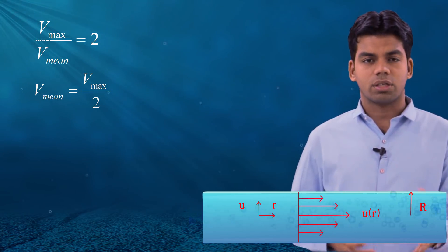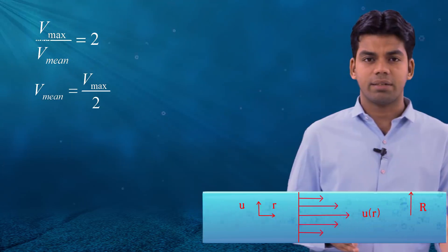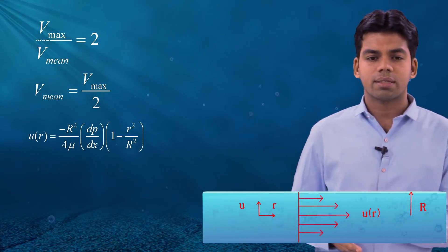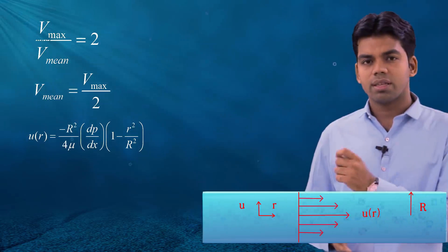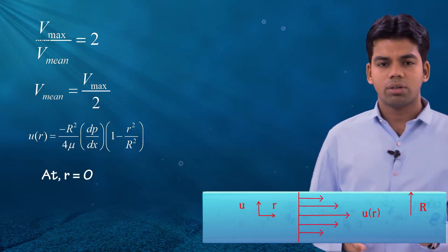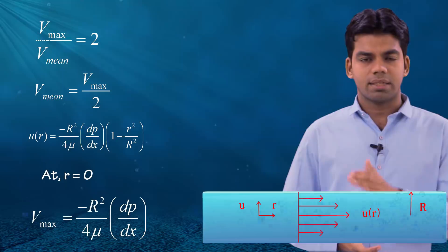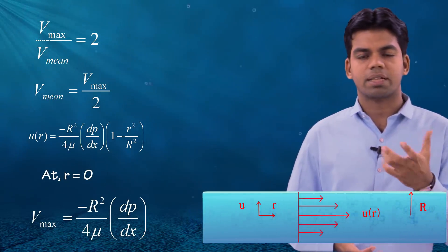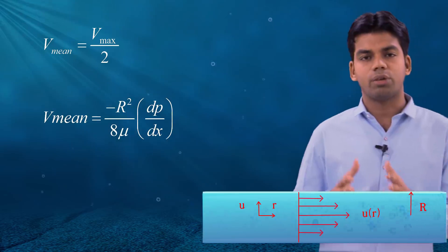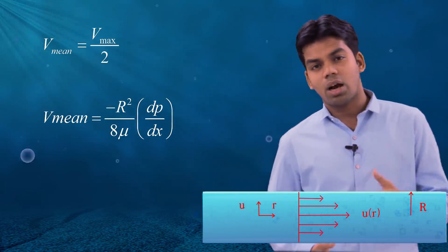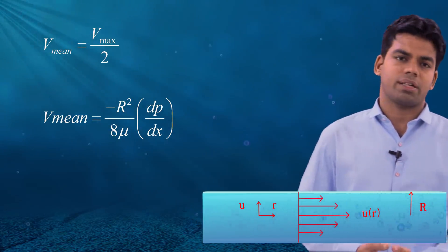The maximum velocity is always at the centre of the pipe, i.e., at r = 0. Substituting r = 0 into u(r) = −(R²/4μ)(dp/dx)(1 − r²/R²), the term (1 − r²/R²) becomes 1, so V_max = −(R²/4μ)(dp/dx). Then V_mean = V_max / 2 = −(R²/8μ)(dp/dx). You can see how quickly and easily this is solved — barely 10 to 15 seconds.